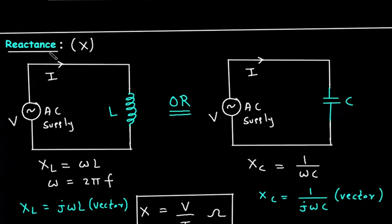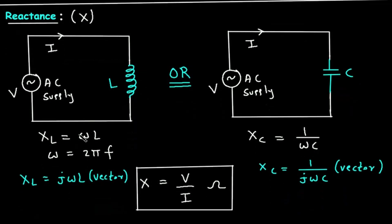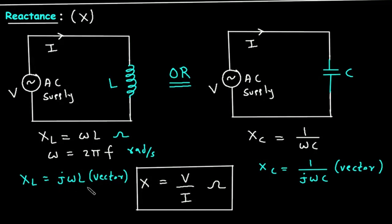For reactance, reactance is denoted by capital X. If the load is an inductor, the reactance will be inductive reactance, denoted by XL, and it equals Omega L, where L is the inductance and Omega is the angular frequency. Omega equals 2 pi F, with units of radian per second. The unit of inductive reactance is Ohm. In scalar form, XL equals Omega L. In vector form, XL equals J Omega L.